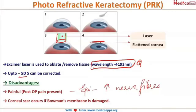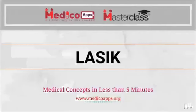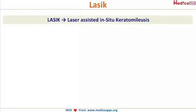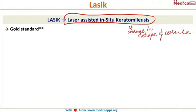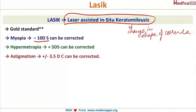The latest and gold standard procedure is LASIK — laser assisted in situ keratomileusis — where keratomileusis means change in the shape of the cornea. LASIK can correct myopia up to minus 10 to 12 diopters, hypermetropia up to plus 5 diopters, and astigmatism up to plus or minus 3.5 diopters. An excimer laser is used here as well.